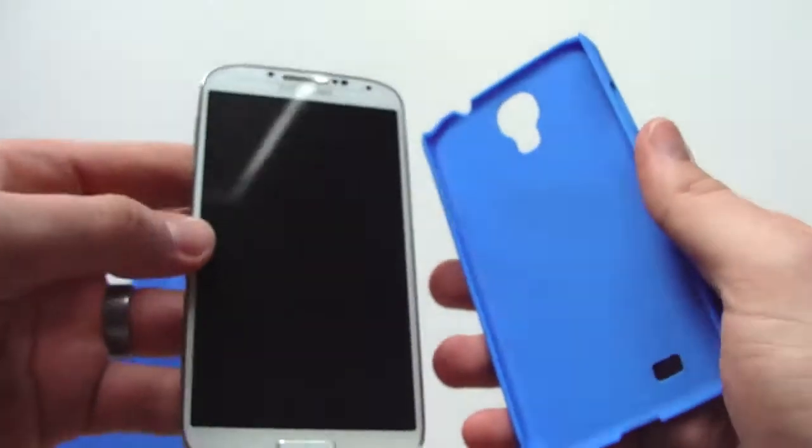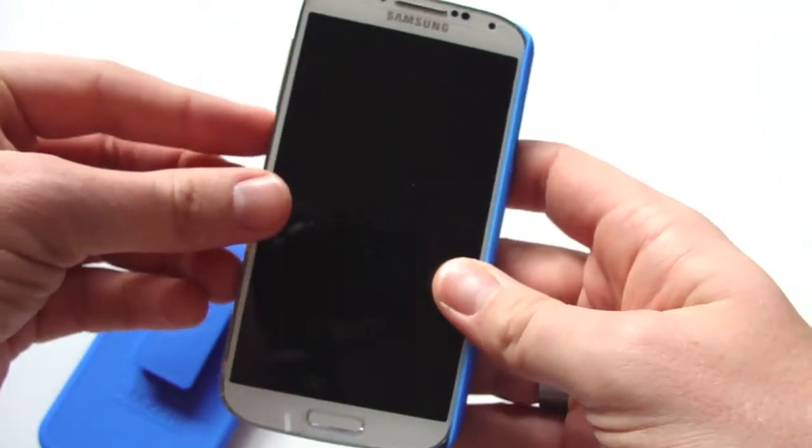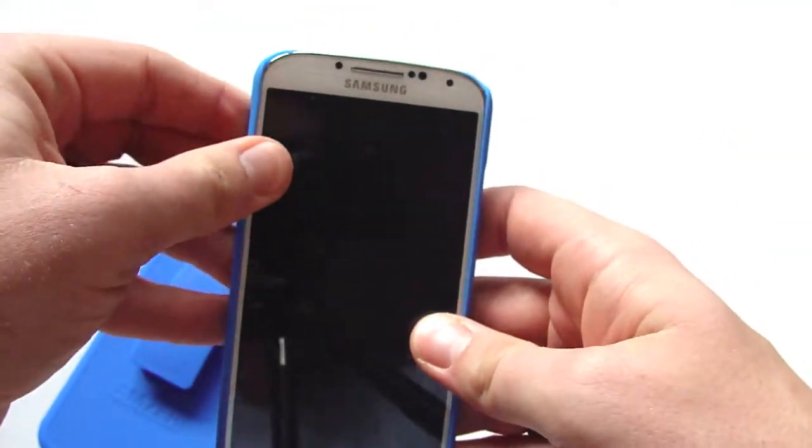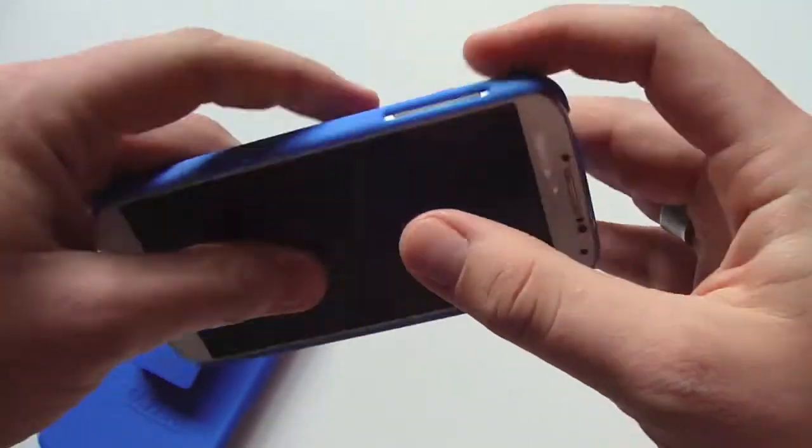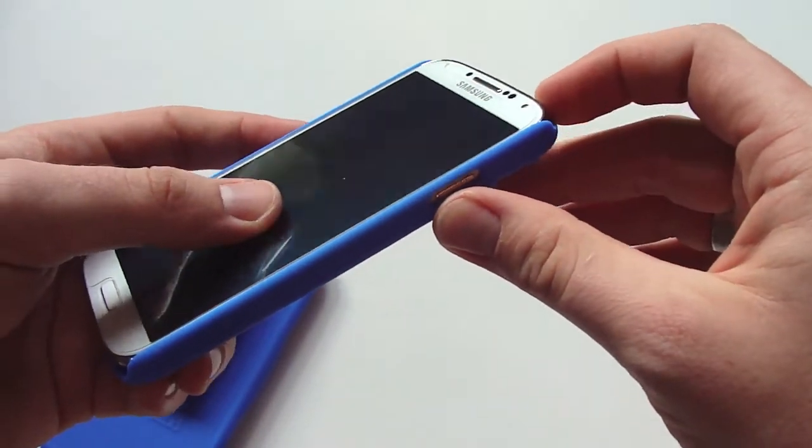So let's go ahead and get this put on. The best way I like to install these kind of cases is to basically start with one side, just press it on the other. You do want to be careful with the buttons on the side though, so just use extra precaution.